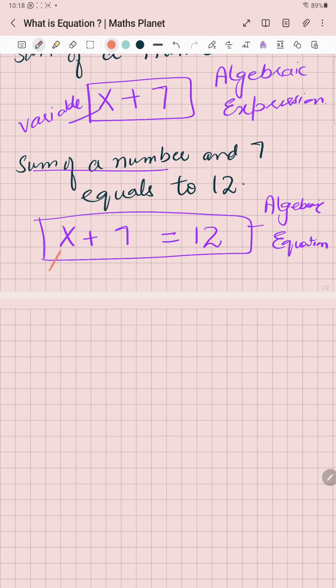What is this? This is a variable. 7 and 12 have fixed values, so they are called constants. What is this? Equality sign of equality. And what is this? This is an operator.